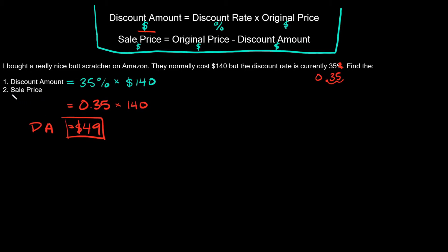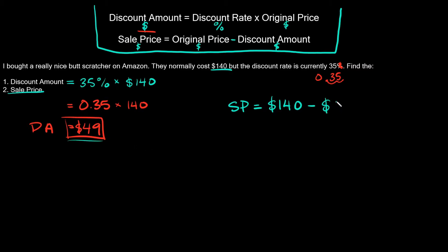Now let's find the sale price. The sale price equals the original price minus the discount amount. The original price is $140 and the discount amount is $49, so the sale price equals 140 minus 49, which gives us $91.